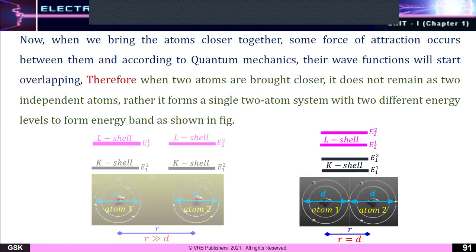When two atoms are brought closer, they do not remain as two independent atoms. They form a single two-atom system with two different energy levels to form energy bands. Energy levels combine together: the K-shell of the first atom and the K-shell of the second atom merge together, and similarly the L-shells combine together, forming the energy bands.